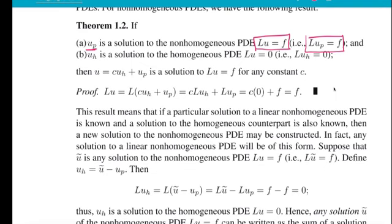And then so that is Up. Up is any particular solution of the non-homogeneous problem. And Uh would be the general solution of the homogeneous PDE, L u = 0. And then the result says that you can build a new solution u as a constant times the homogeneous solution plus the particular solution. And that will be another solution for the non-homogeneous problem L u = F.